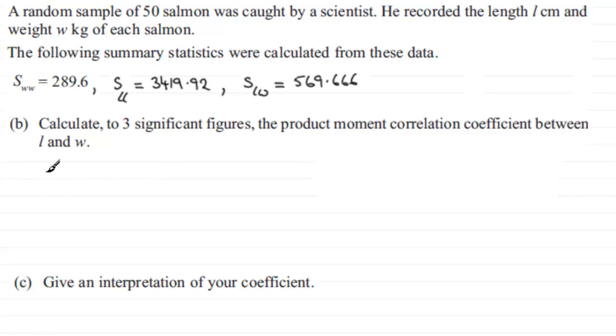given the formula. When the data is between X and Y, the product moment coefficient R is given as SXY all divided by the square root of SXX and SYY. Now this formula is generally given in your formula book, but it does help to learn these formulas anyway. What we've got to do